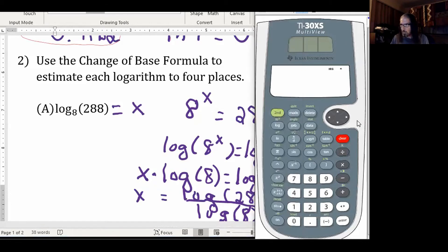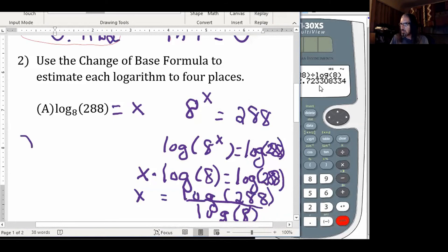So, taking the log of 288, divided by the log of the old base 8, rounding that to 4 places, the zero is going to make that round down, so approximately 2.7233.